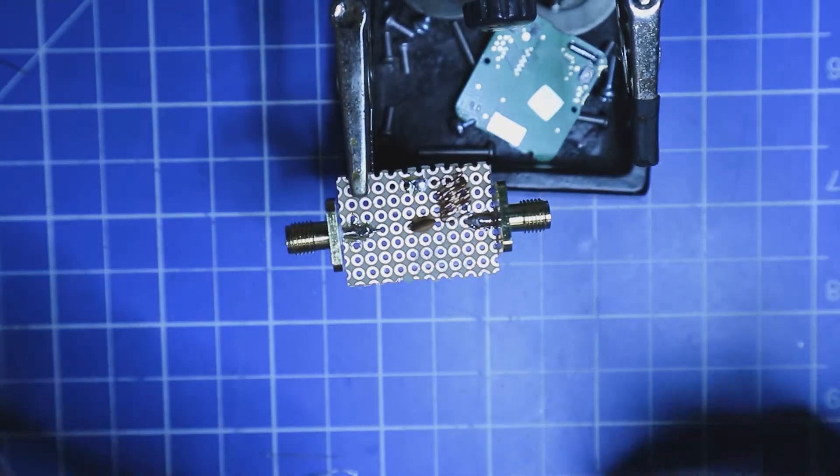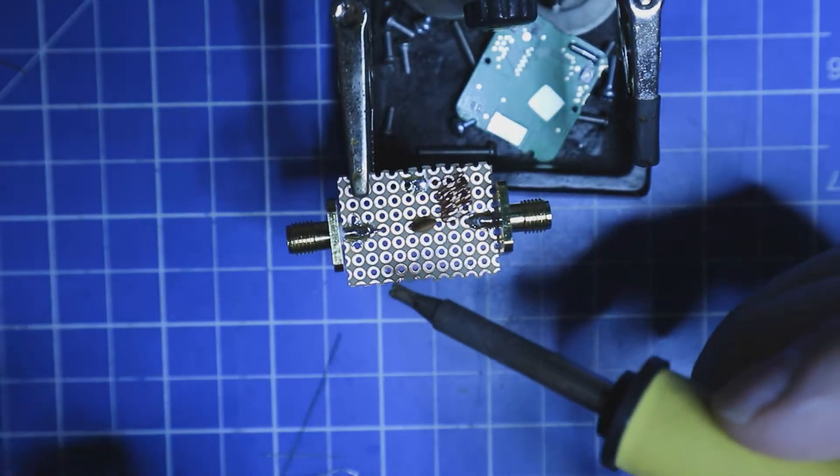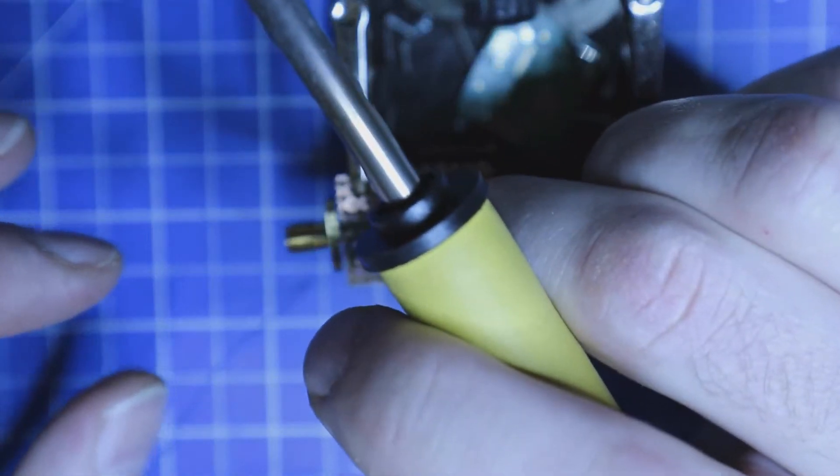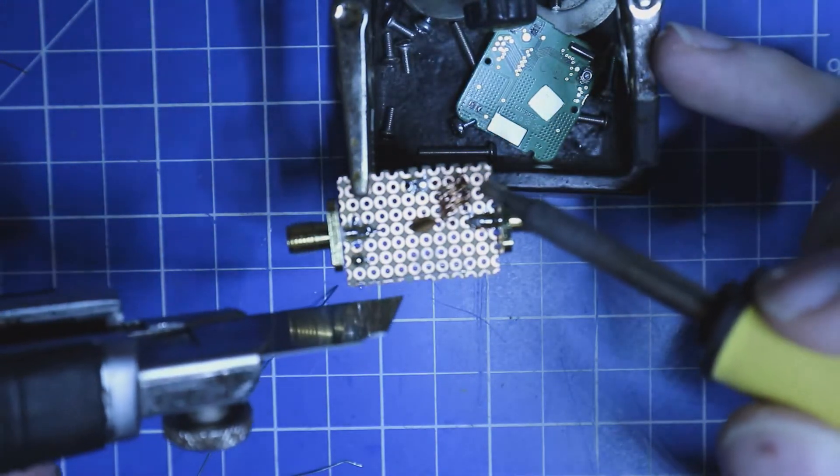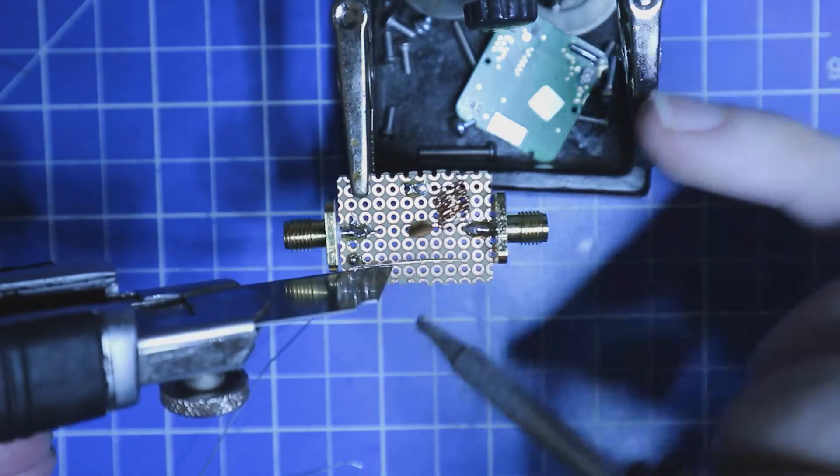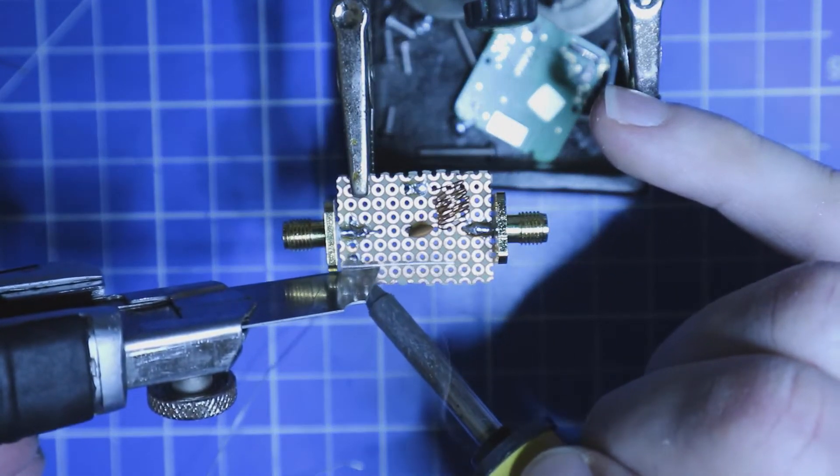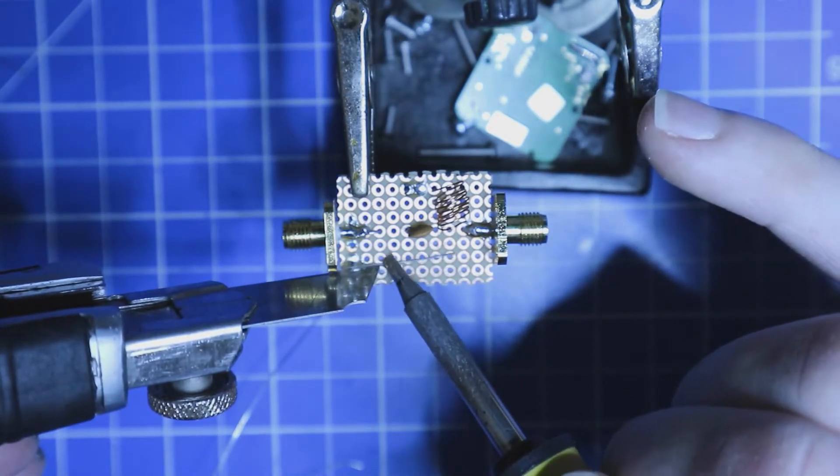We can use some solder to make a bridge on the perfboard here. And we can also put in some trims of some parts we used to make the soldering a little bit easier.